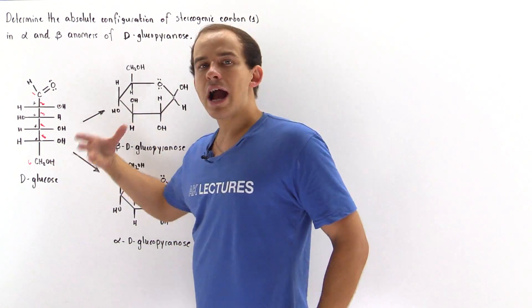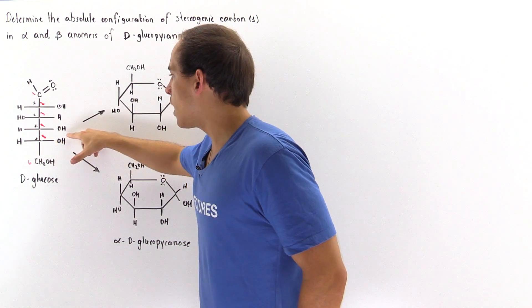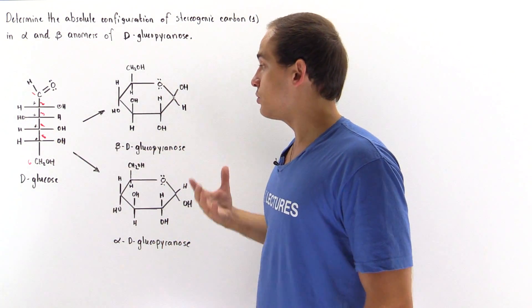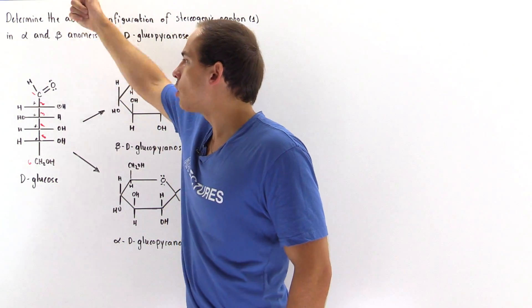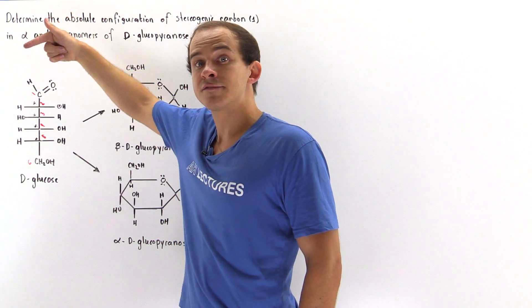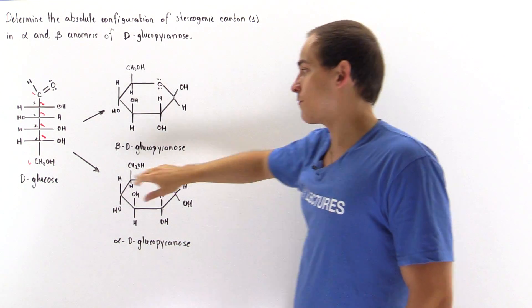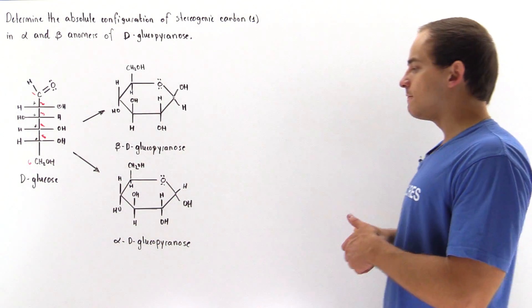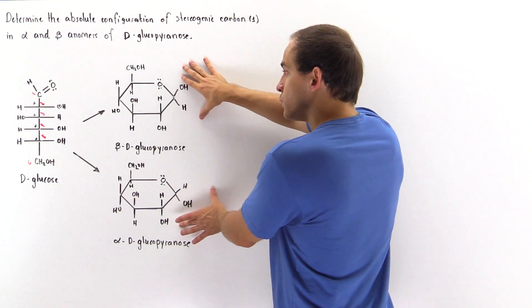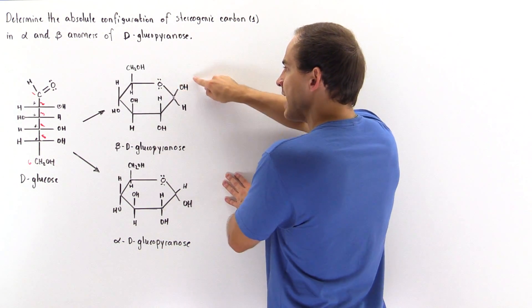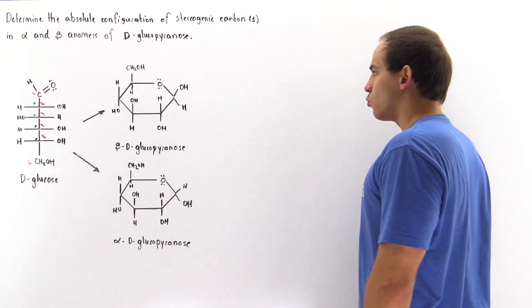When our intramolecular nucleophilic reaction takes place and this hydroxide acts as our nucleophile, it can attack this carbon either from the top or from the bottom. If it attacks from the bottom, we form the beta-D-glucopyranose. If it attacks from the top, we form the alpha-D-glucopyranose. The main difference between these two molecules is the orientation of the hydroxide group attached to carbon number one.